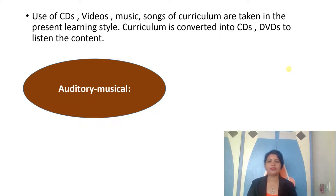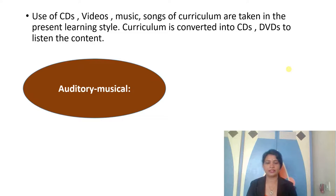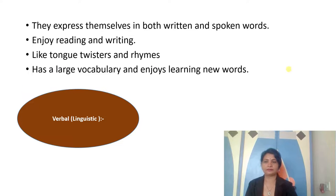The next type of learner is the auditory or musical learner. For this type of learner, you have to use CDs, videos, music, and songs. The curriculum is converted into CDs and DVDs so the learner can listen to the content.